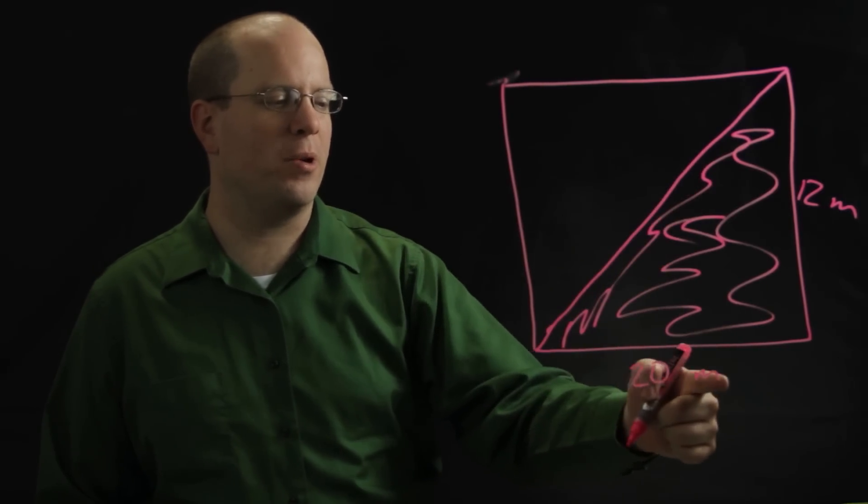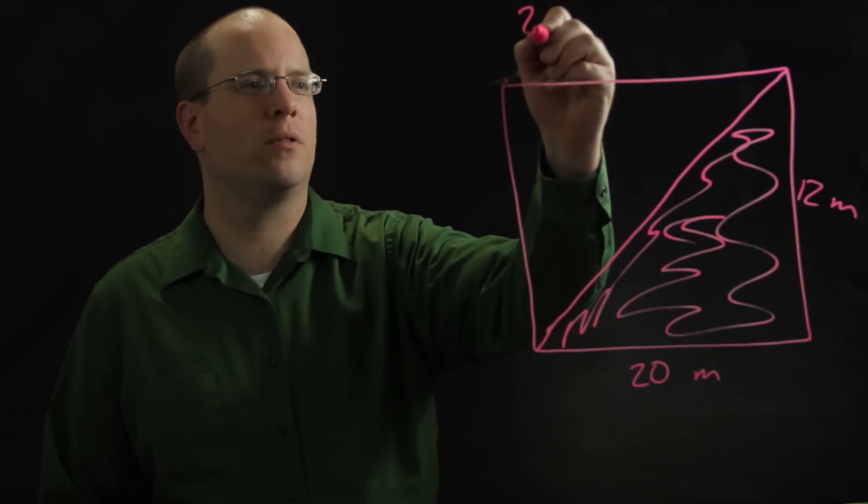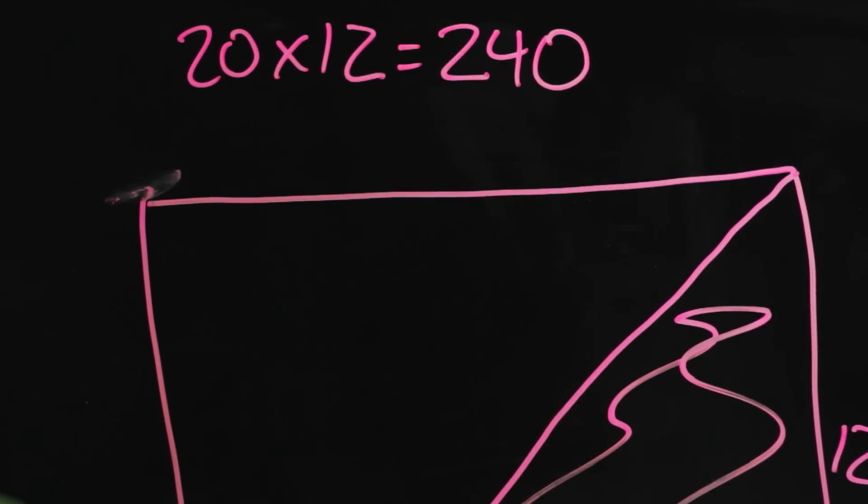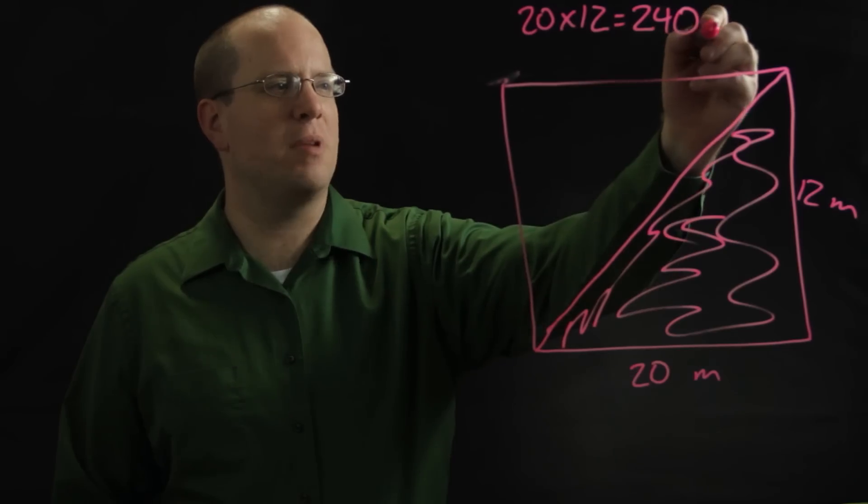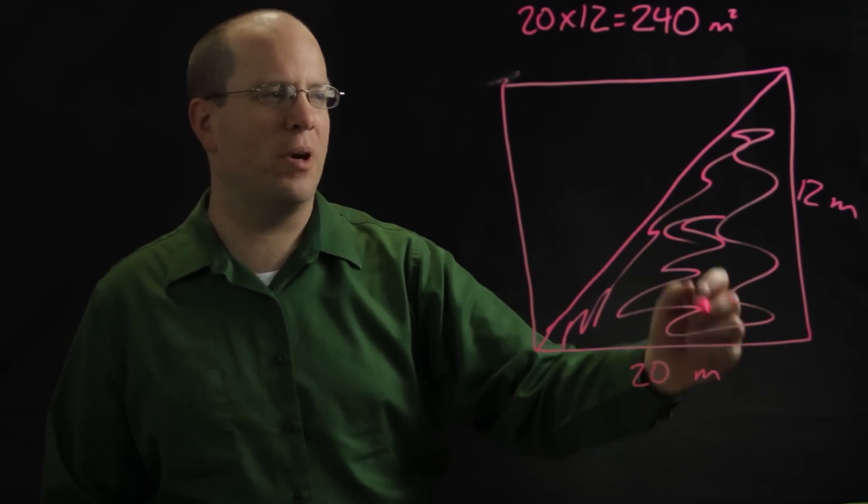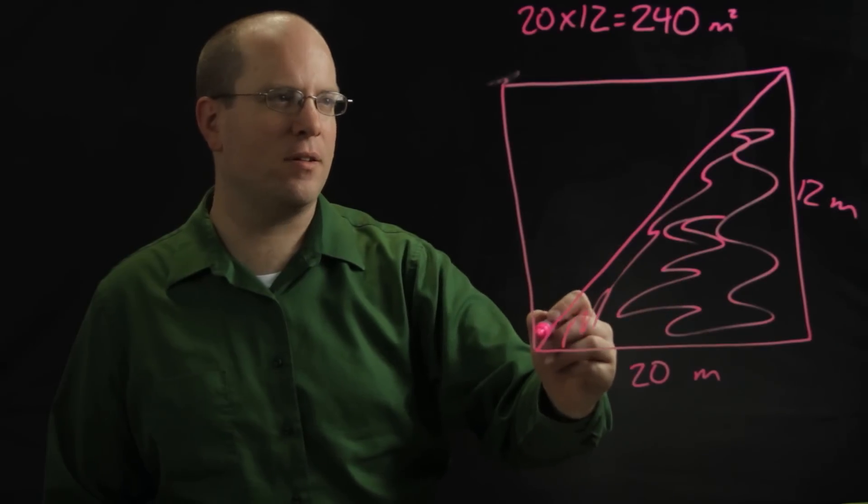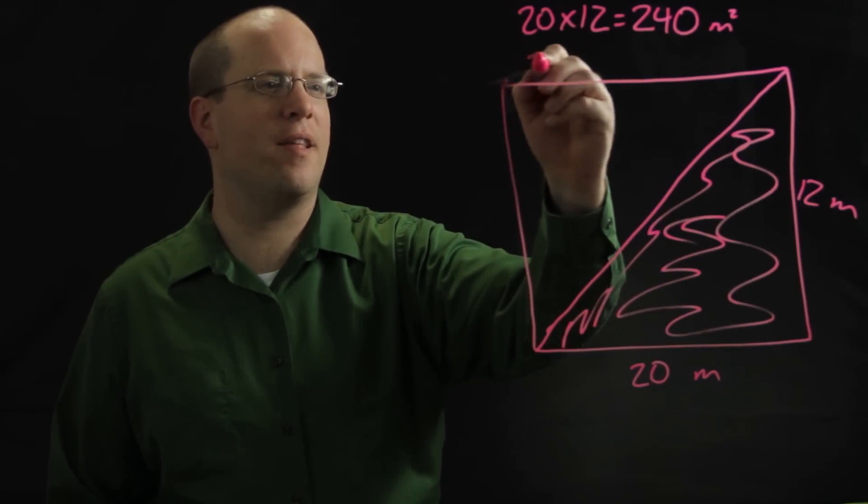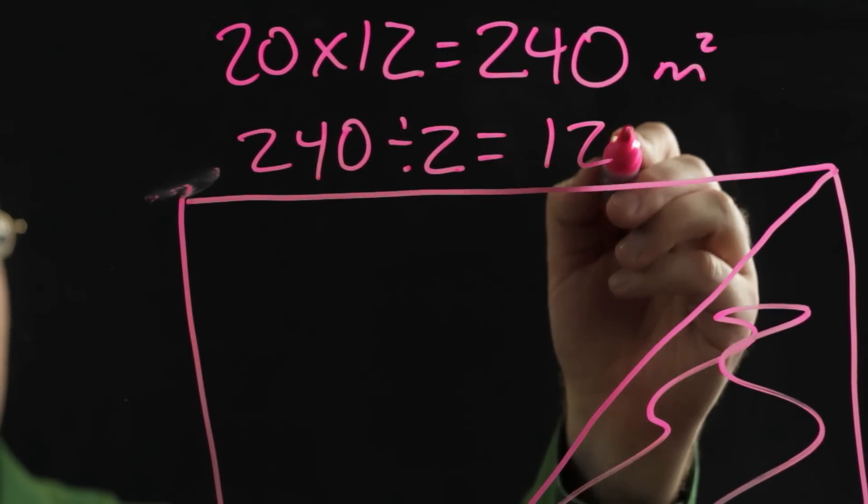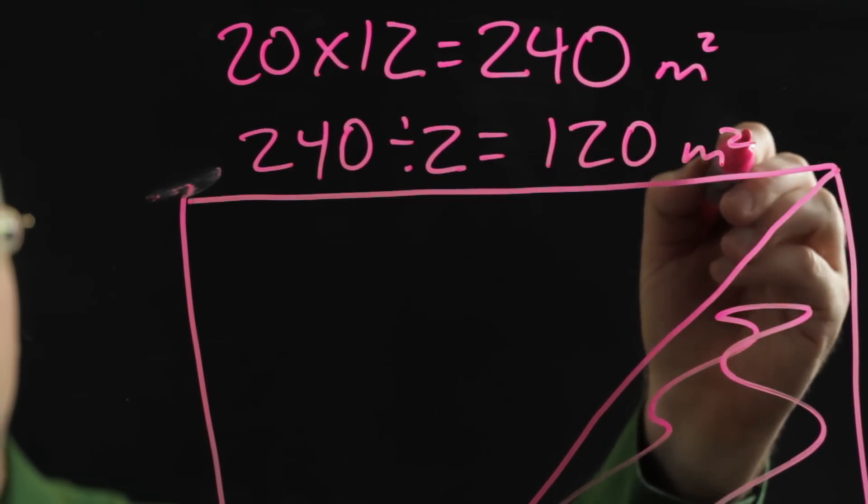Which would give them 240, and that will give them the area. In this case, it's meters squared. That will give them the area of the entire rectangle, but then they've cut it in half, so now they're going to divide that by 2, which will give them 120 square meters.